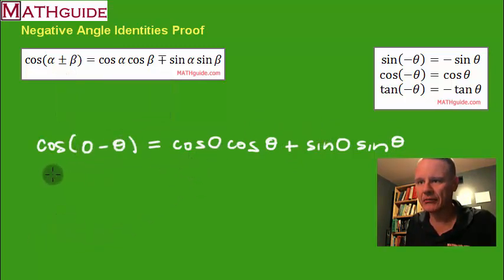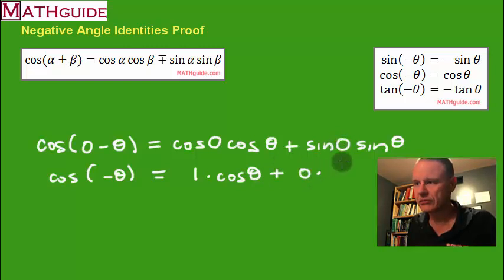Zero minus theta is the opposite of theta, which is what I wanted right here. Kind of clever. Cosine of zero is one. Cosine of theta depends on the theta. Sine of zero is zero. Got to know something about your unit circle here. Sine of theta depends on theta. So I've got to leave that there.